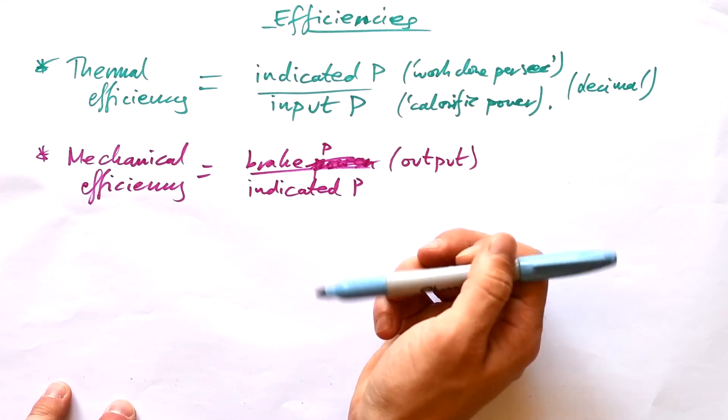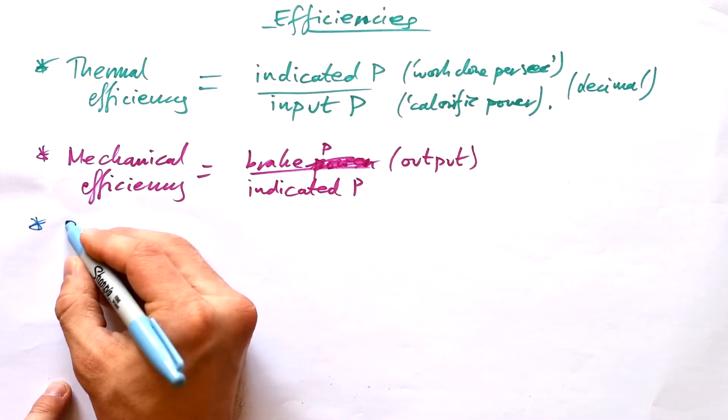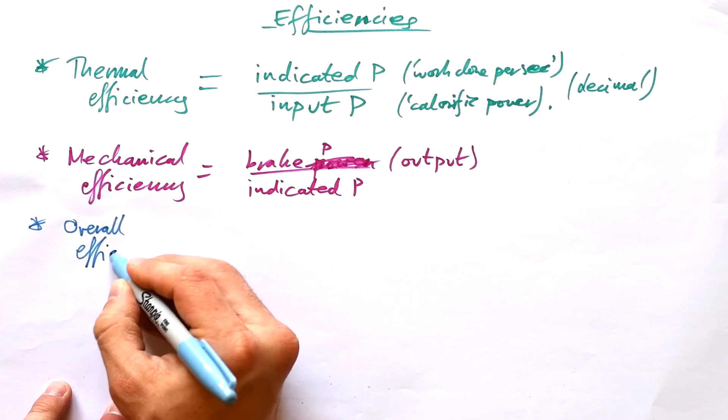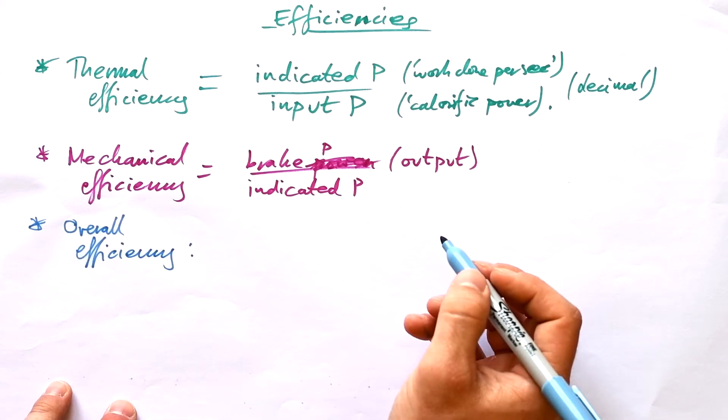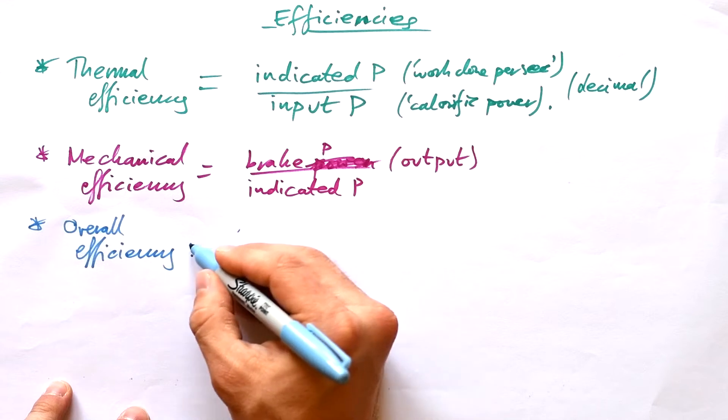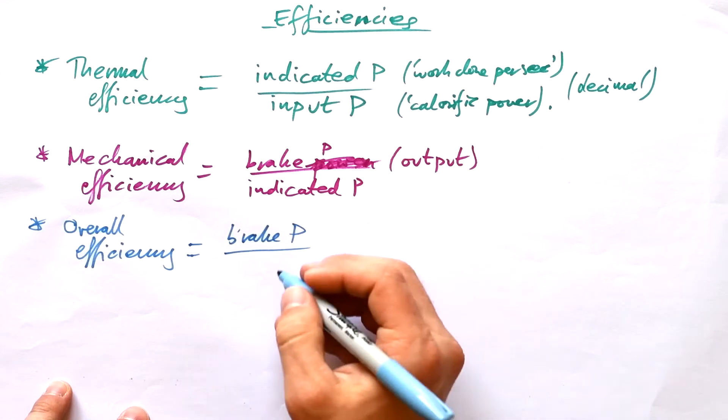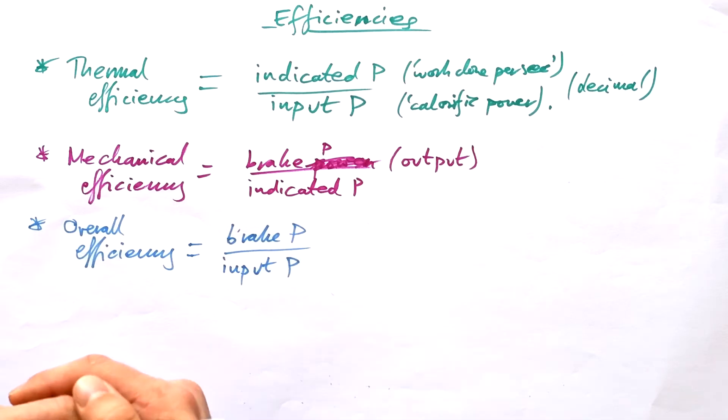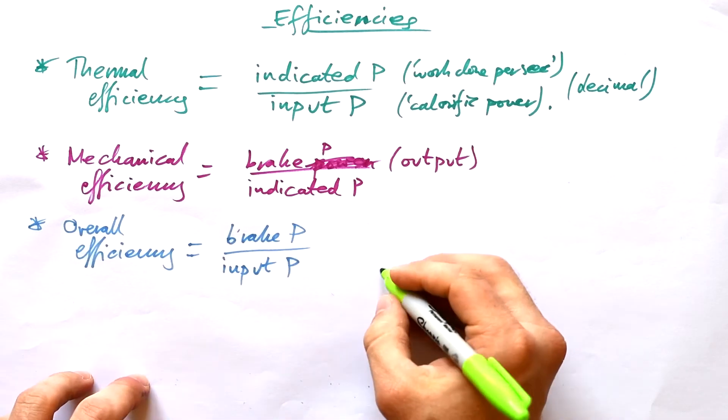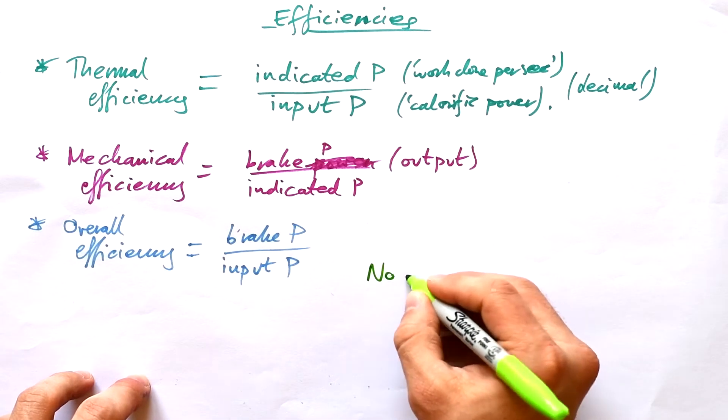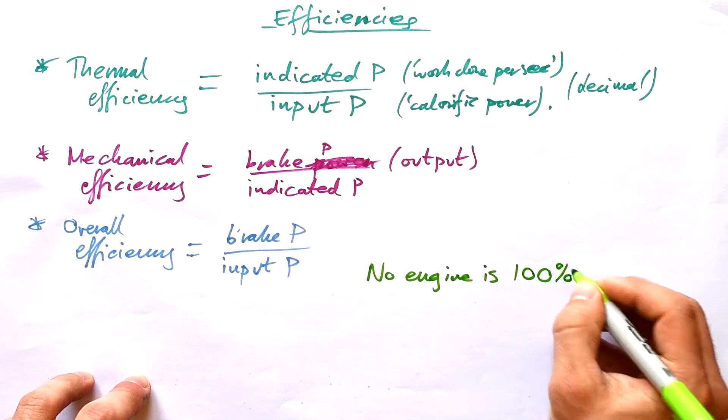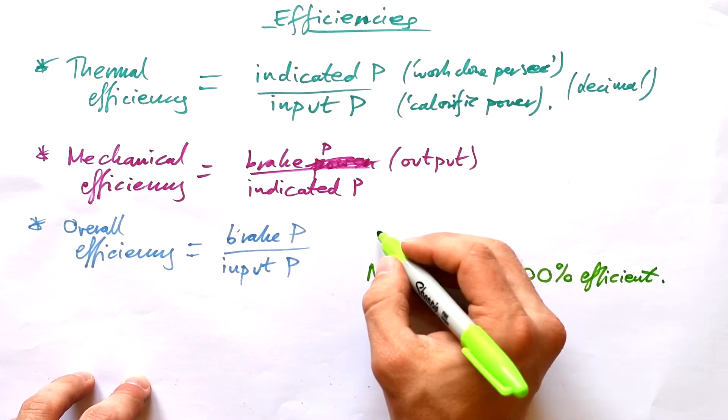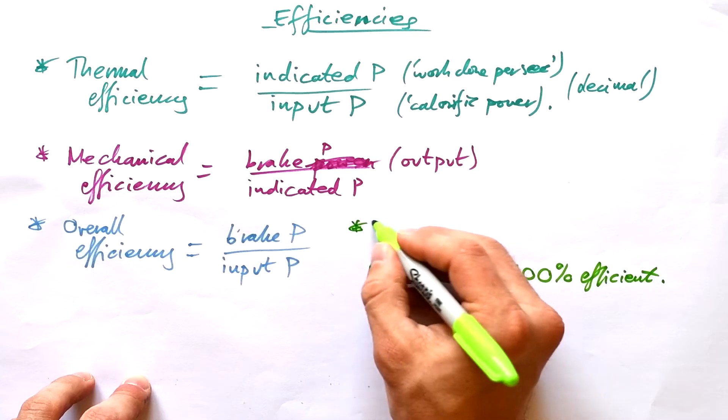Now, can you see that neither of these give the overall efficiency of an engine? And so we have one more, and that's overall efficiency. And you can probably guess what this is. That's our brake power, that's what we finally get out of the engine, divided by the input power from our fuel. And it might seem obvious, but we can say that no engine is 100% efficient. And do you know what? We've just stumbled across the second law of thermodynamics.